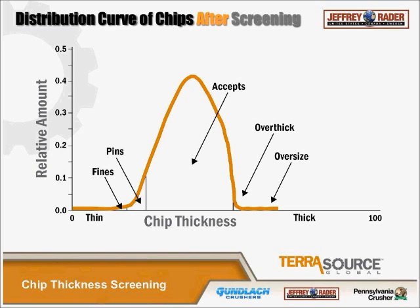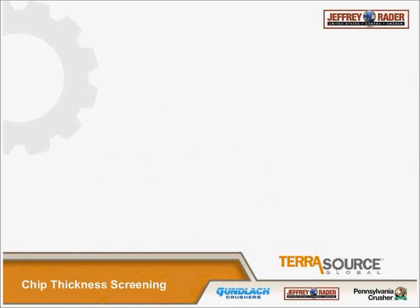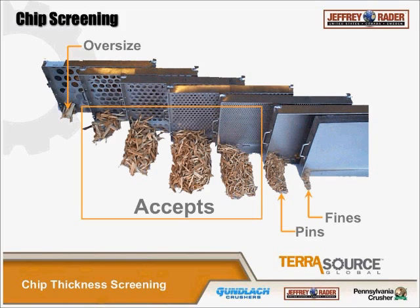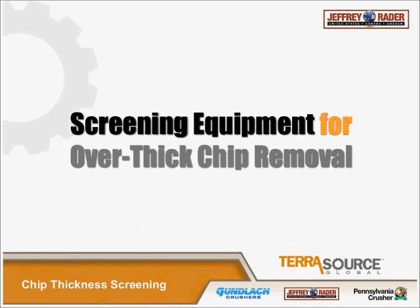Looking back at that picture, all the pans in this classifier have round holes. While there is a direct relationship between the length of a chip and its thickness, there are chips chunky enough that will pass through some of these round holes and still be overthick. So when we do an analysis on a chip thickness system, we use a chip classifier that actually measures the quantities of chips at certain thicknesses and gives you a distribution curve.